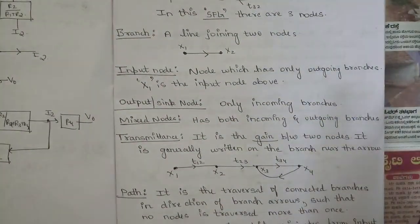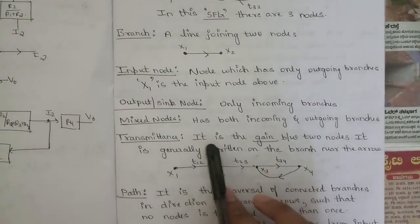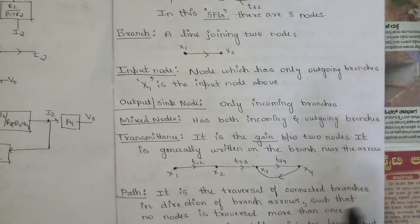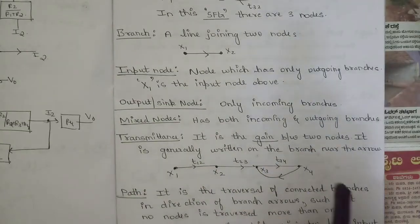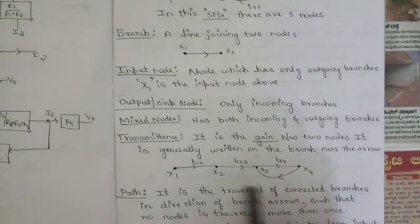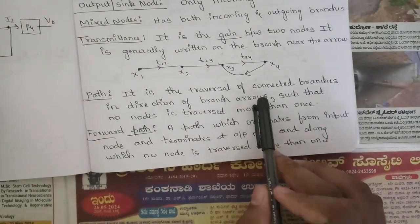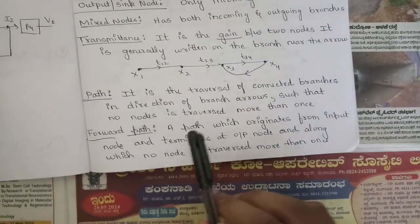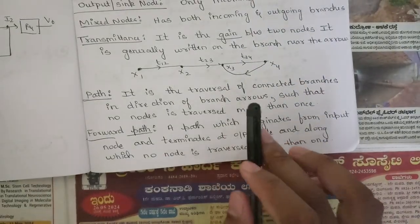Transmittance is the gain between two nodes and is generally written on the branch near the arrow. The next concept is path — it is the traversal of connected branches in the direction of the branch arrow such that no node is traversed more than once.